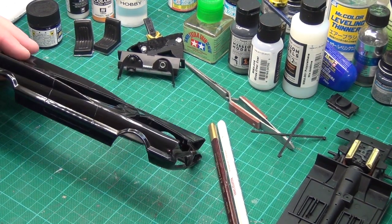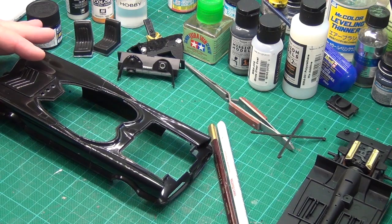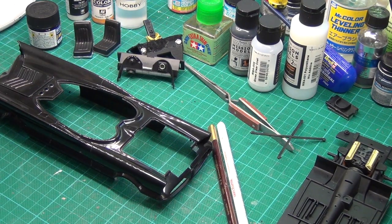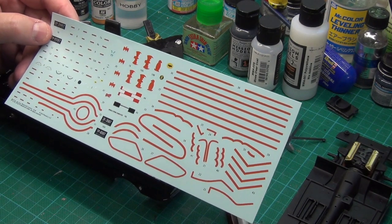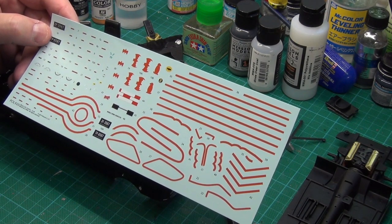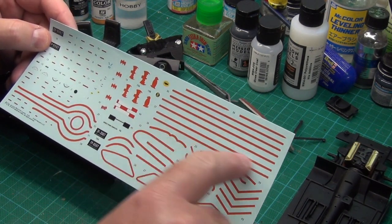I'm doing some of the decals on the car body and I've got a new decal sheet here. I previously tried this and the decal sheet just broke apart, these pieces here just broke into pieces.